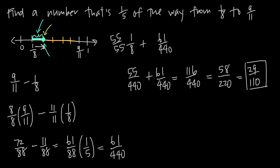So if we label this point on the number line — just as we labeled 0, 1 eighth, and 9 elevenths — we would label it as 29 over 110. And we know that that point is 1 fifth of the way from 1 eighth to 9 elevenths.